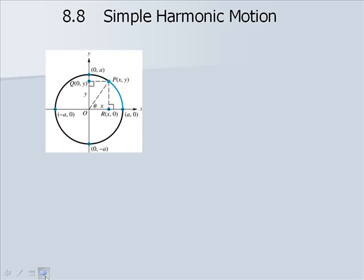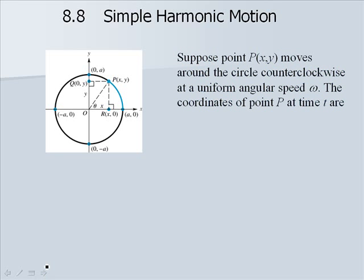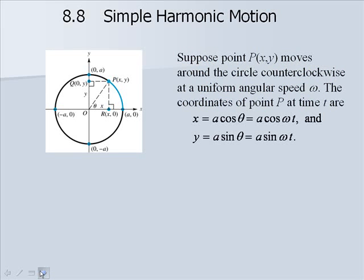Look at the following figure. Suppose point P of xy moves around the circle counterclockwise at a uniform angular speed omega. The coordinates of point P at time t are x equaling a cosine of theta and y equaling a sine of theta.